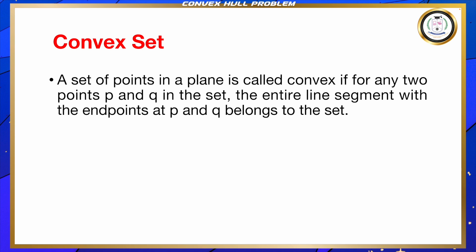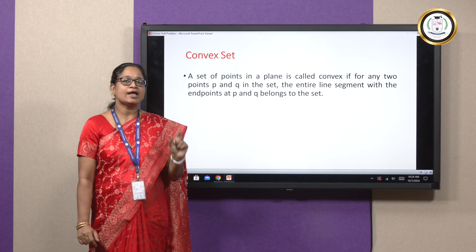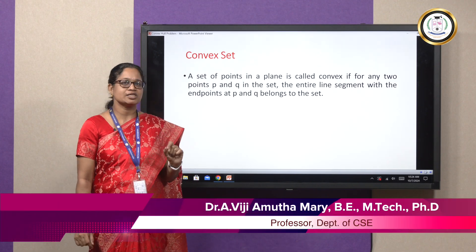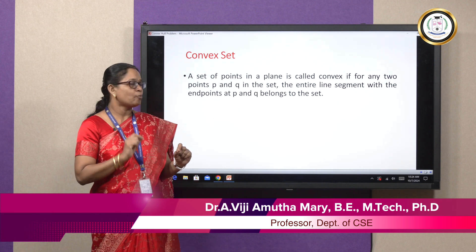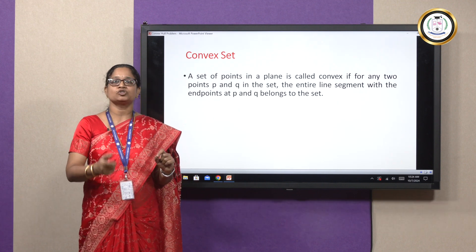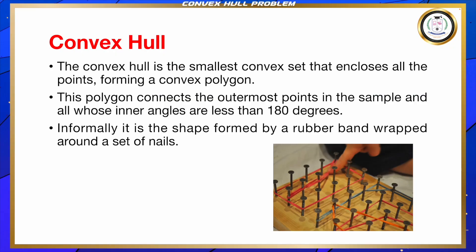First, let me define what is a convex set. A set of points in a plane is called convex if for any two points P and Q in the set, the entire line segment with the endpoints at P and Q also belongs to the set. Now let us define what is a convex hull. The convex hull is the smallest convex set that encloses all the points which forms a convex polygon.